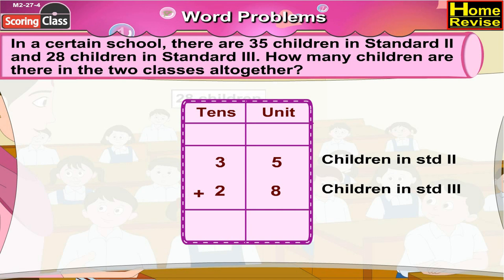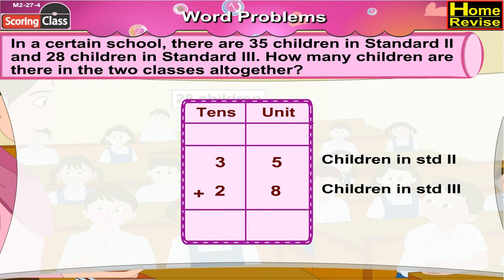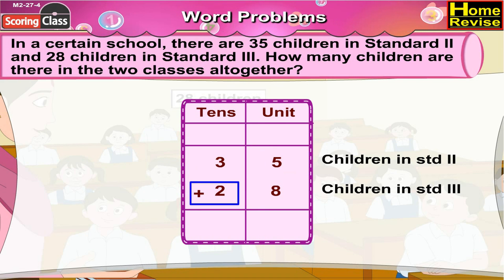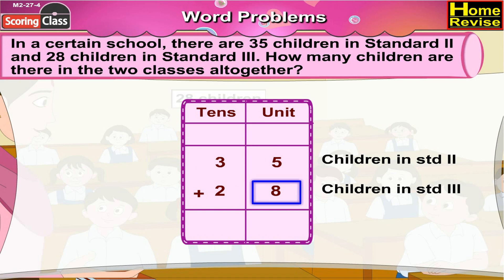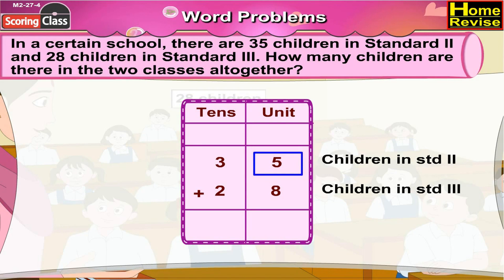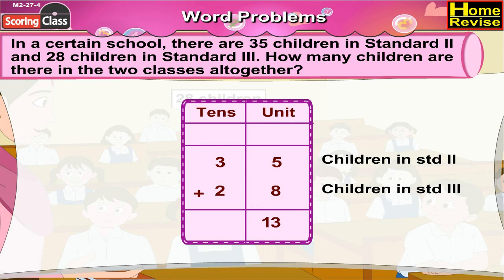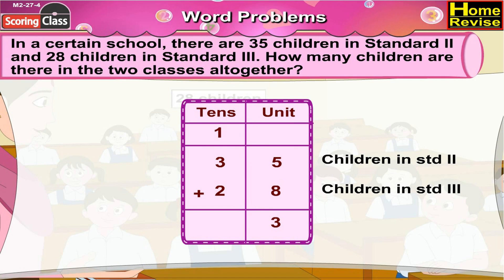The number of children altogether in both classes would be 35 plus 28. That is 3 tens 5 units plus 2 tens 8 units. Now 5 plus 8 would be 13. So we write 3 here and 1 ten is carried to the tens column.